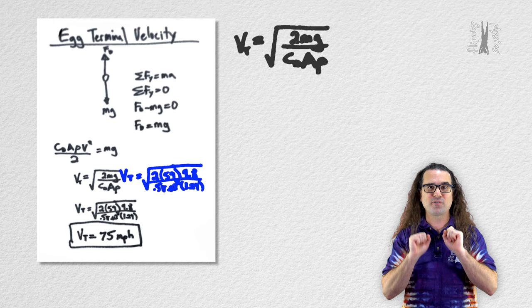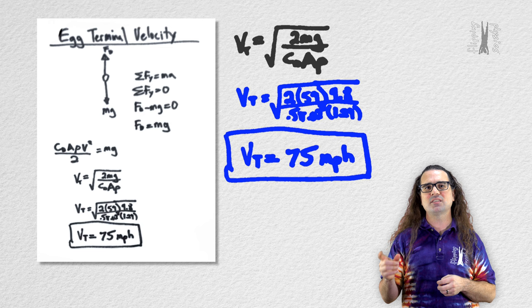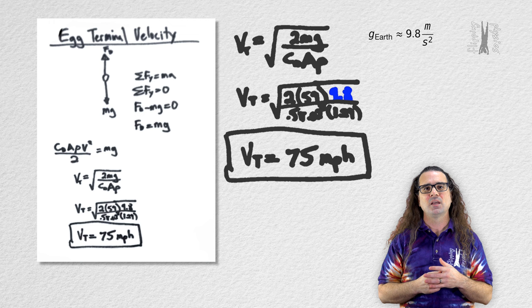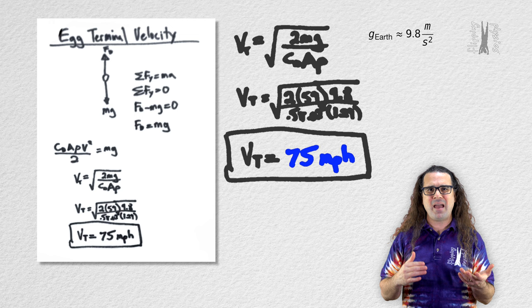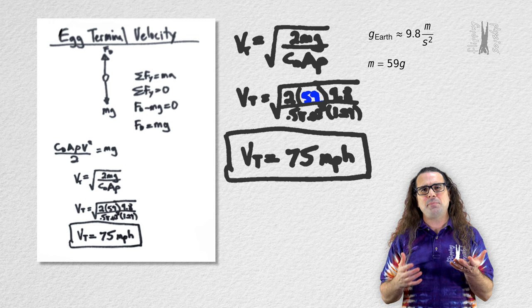You can see that because the acceleration due to gravity you used is 9.8 and must be in meters per second squared, and your terminal velocity is in miles per hour.